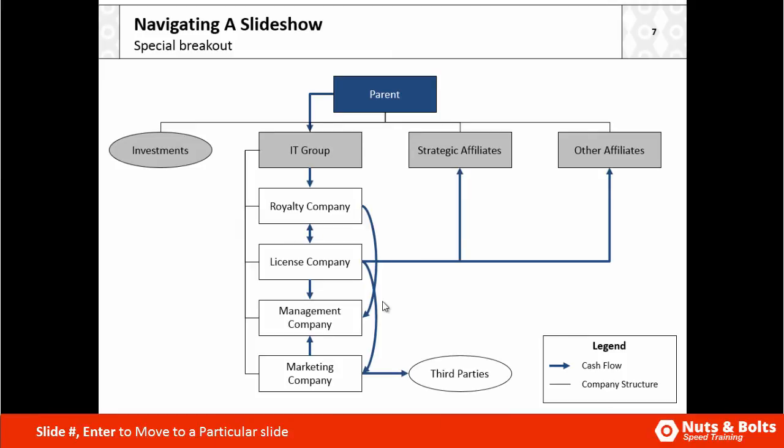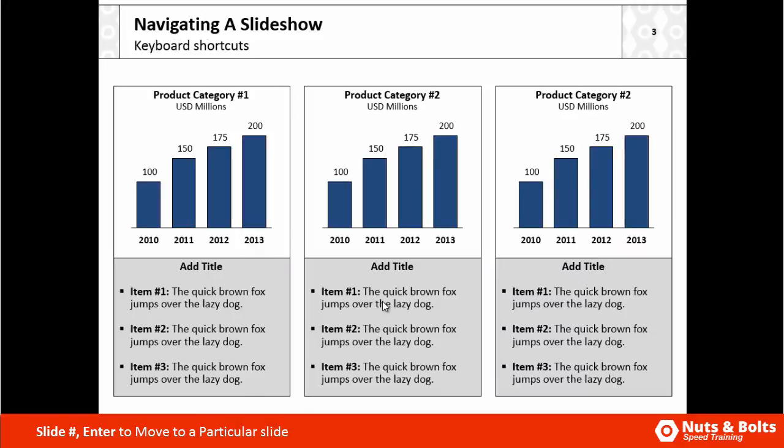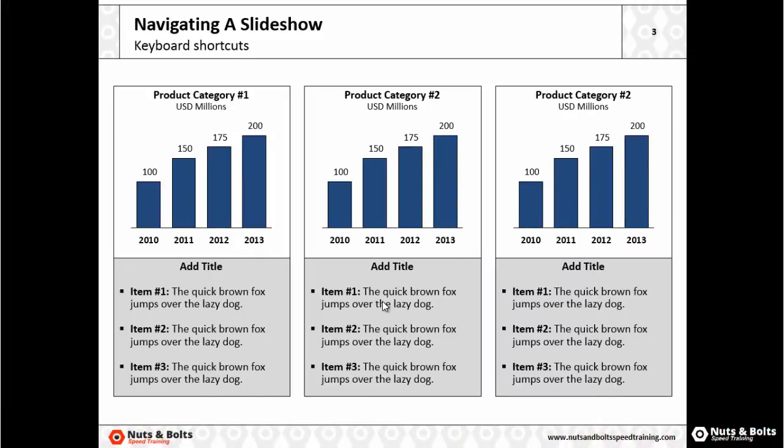You can also use your keyboard number and hit Enter. So if I want to jump to slide number three, I can hit 3 on my keyboard and hit Enter, and I immediately jump to slide number three.